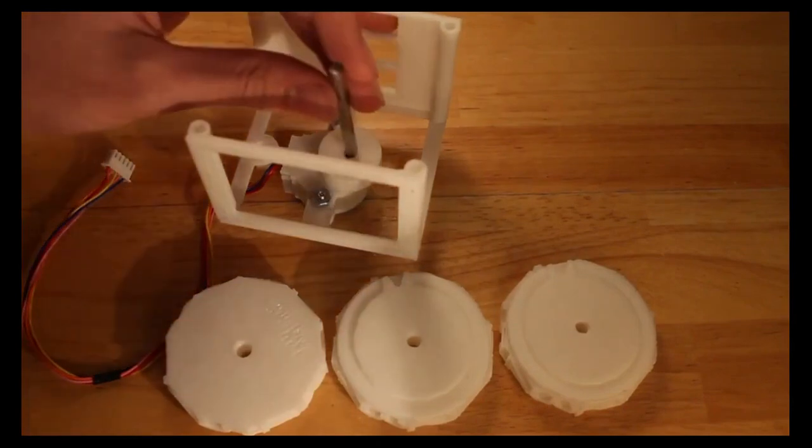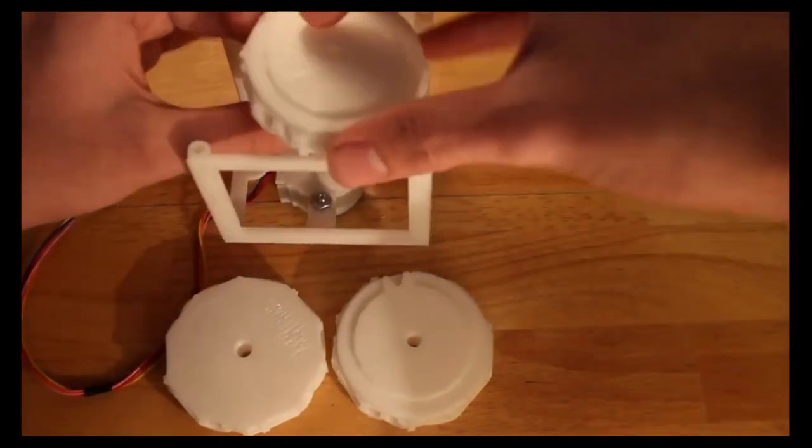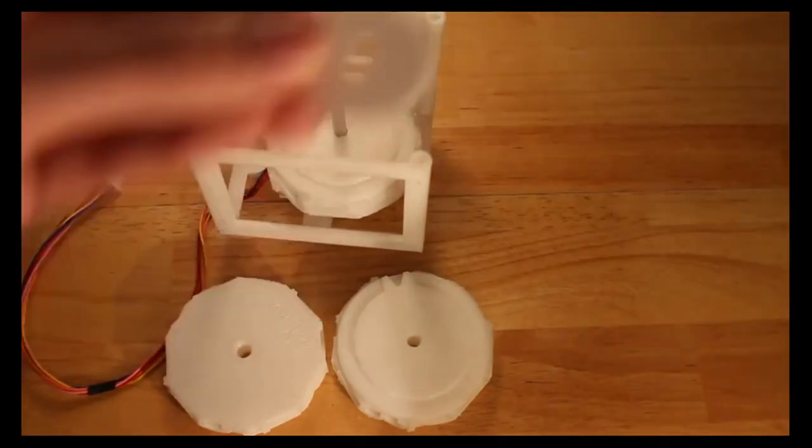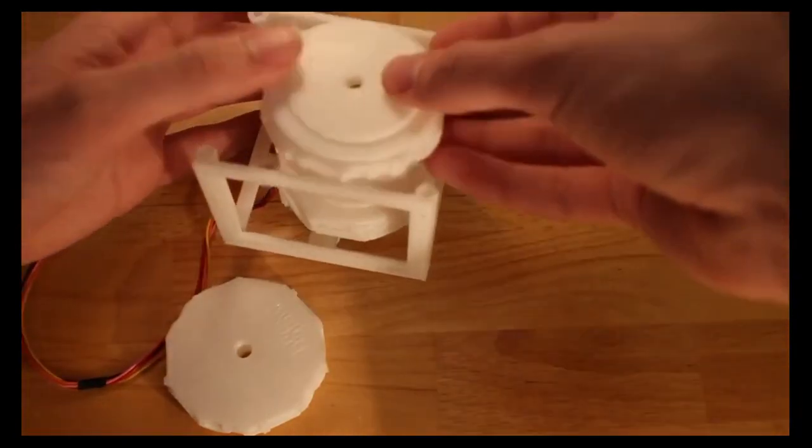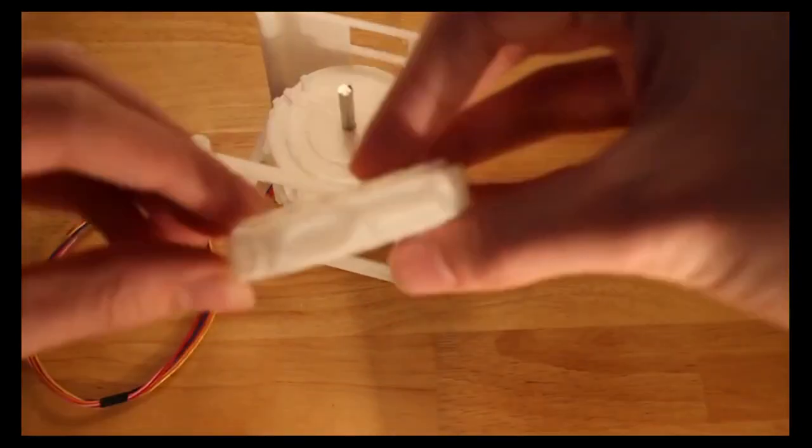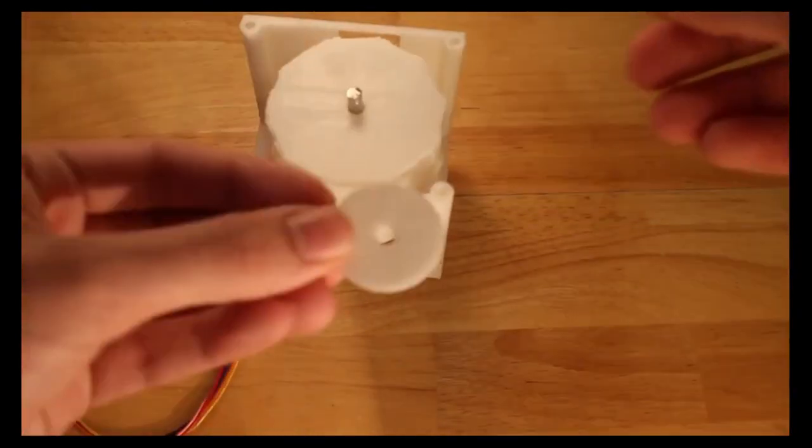Next you're going to use your 2 1⁄4 inch rod and slide the first number wheel on and align it with the pins. Then a washer, then the second number wheel, and then another washer. Then the final number wheel, then finally one last washer.